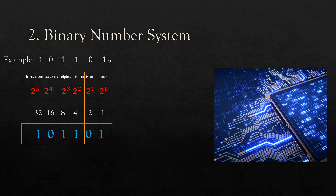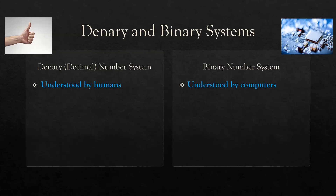Let's say we had this example: 1 0 1 1 0 1 in base 2. This means we have 1 one, 1 four, 1 eight, and 1 thirty-two if we're talking denary. I know things might seem a little confusing, but once we get to converting, it will make more sense.